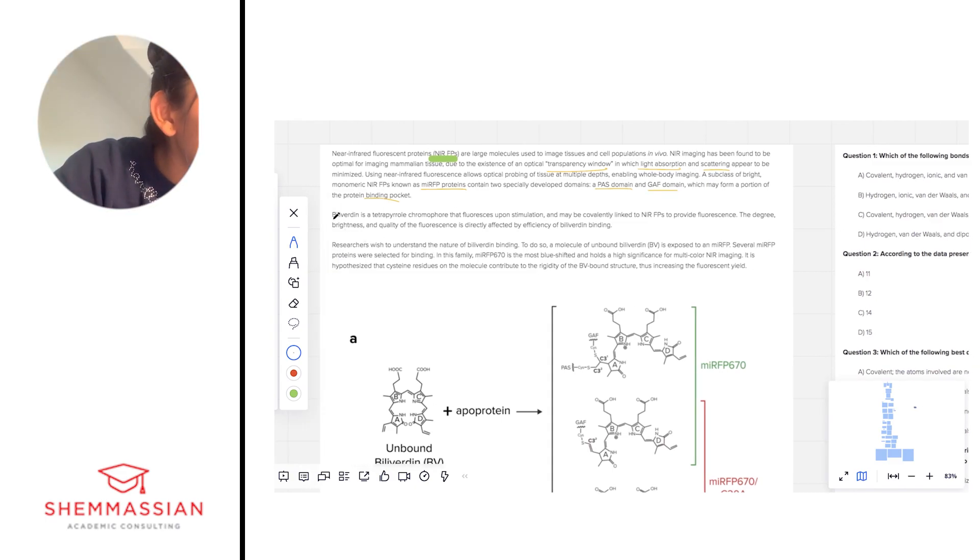Biliverdin is a tetrapyryl chromophore that fluoresces upon stimulation and may be covalently linked to NIRFPs to provide fluorescence. The degree of brightness and quality of the fluorescence is directly affected by efficiency of biliverdin binding. We're learning that this is something that can be stimulated and fluoresce—that's a common type of tagging procedure we've seen in MCAT content—and the quality of the fluorescence is based on binding, so this means you can use this as a measurement of binding, potentially binding affinity.